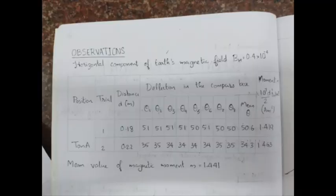Coming to the observation part, we need to write the value of small d and also the values of theta 1, theta 2, etc. up to theta 8. Then we can find mean value for this theta. Substituting the values of theta 1, theta 2, etc. up to theta 8 in the given equation, you will get the moment of bar magnet that we used for this experiment.